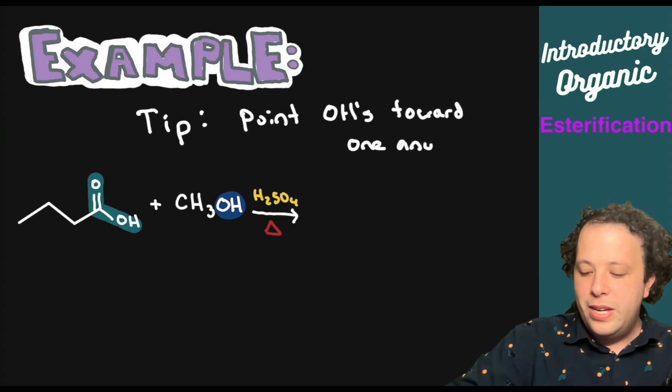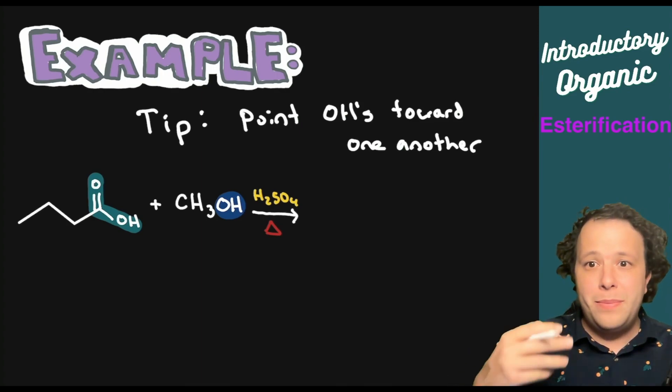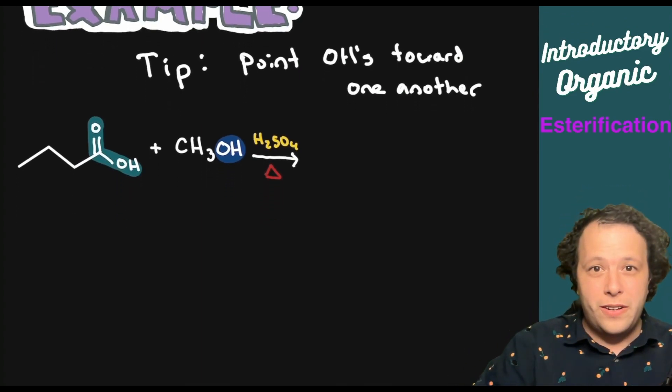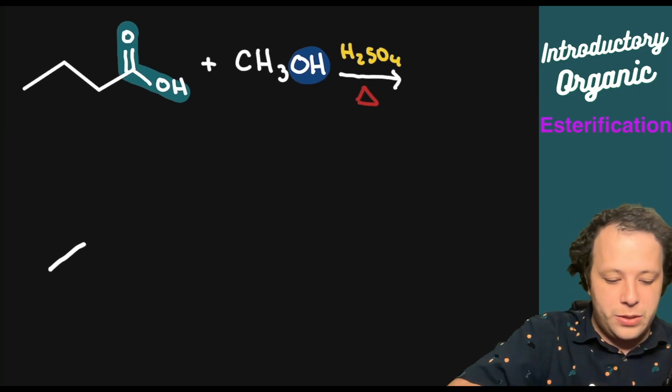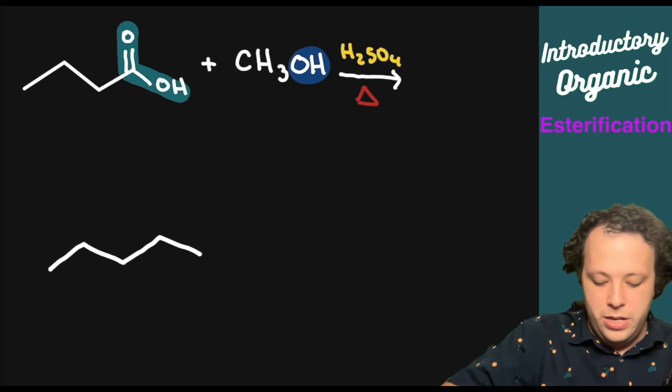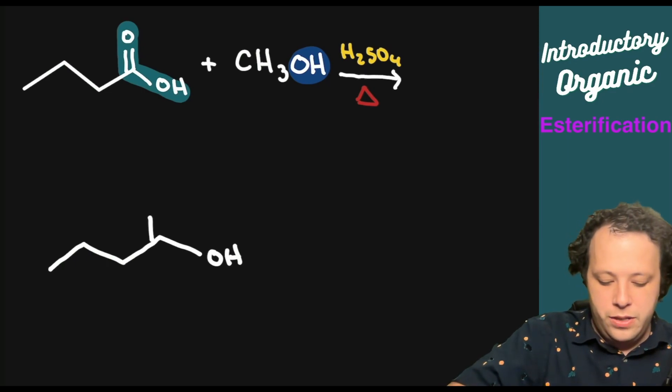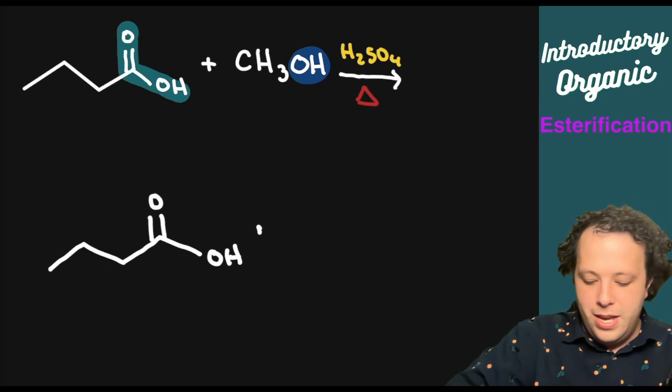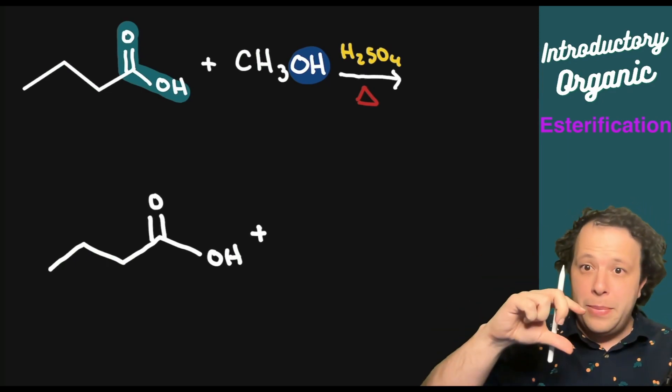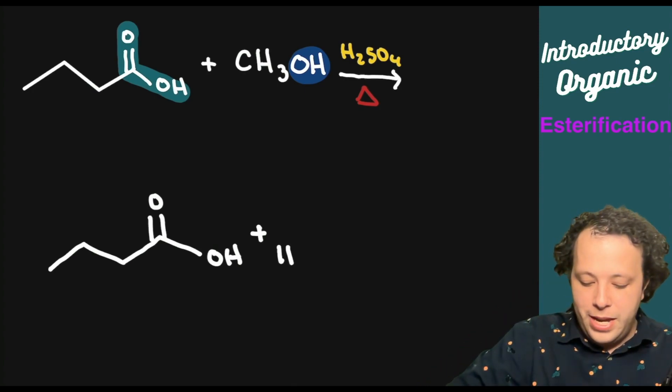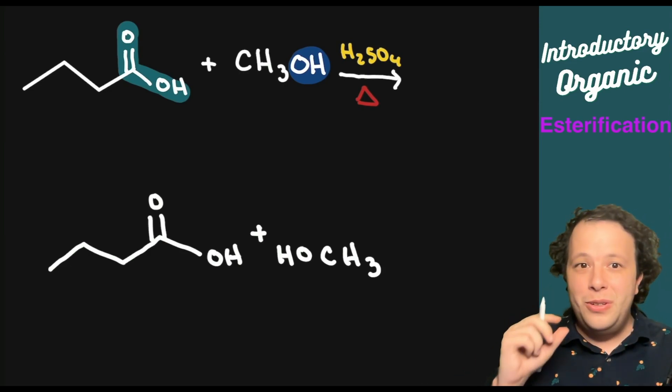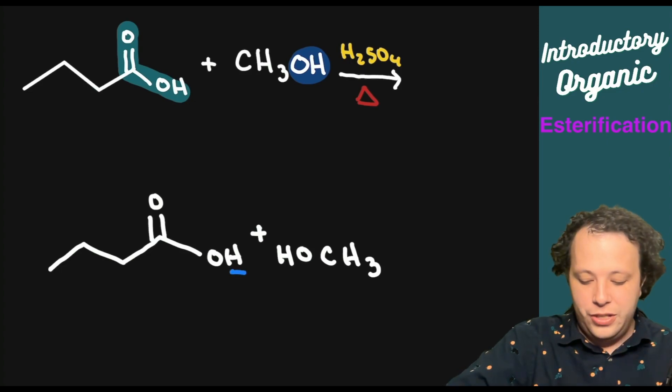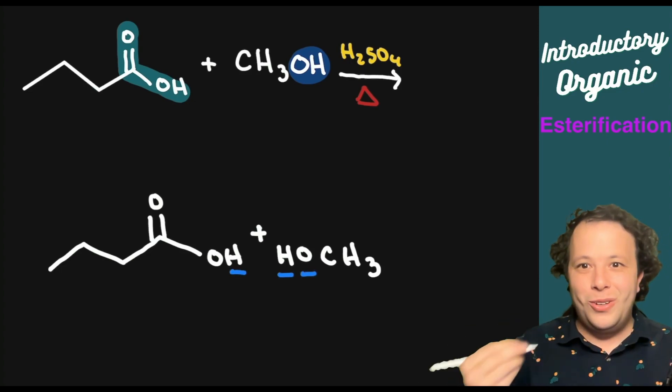Now, when you do that, it'll actually align up how we're going to be removing the water component. So what we're going to do is we're going to rewrite our structure. So we have one, two, three, four with an OH and with a double bond O. And we are going to flip the alcohol. So that way you have the HO and then the CH3 on the other side.